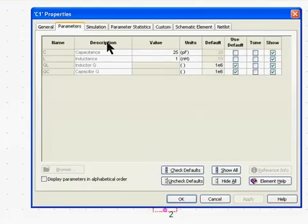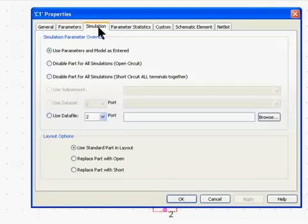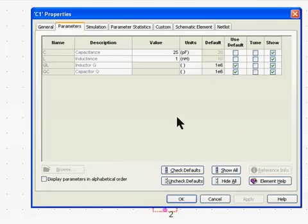If you also notice, we have a simulation tab. This allows you to override the parameters by using a data file. If I click on use data file on this tab, I can browse for an S parameter file. I could also substitute an S parameter file for this part from a manufacturer or possibly measured data.